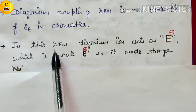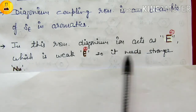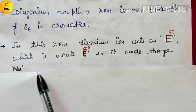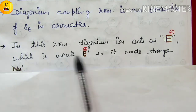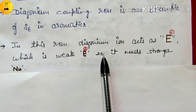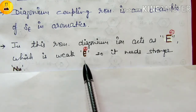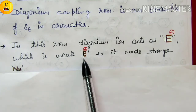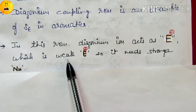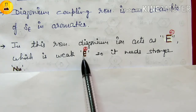In this reaction, the diazonium ion acts as an electrophile. It is a weak electrophile, so it is important to understand: Benzene Diazonium Chloride gives you the diazonium ion as an electrophile, but its electrophilic nature is weak — it doesn't behave like a normal electrophile.